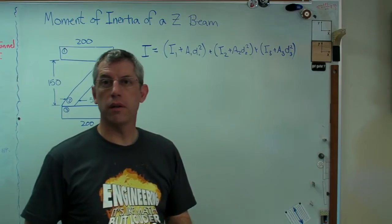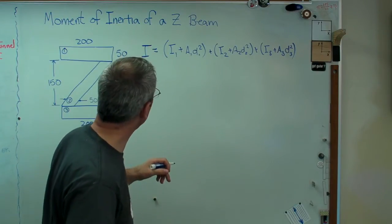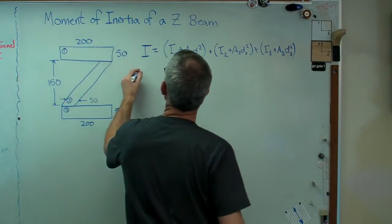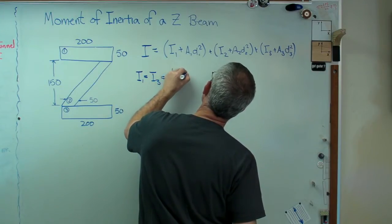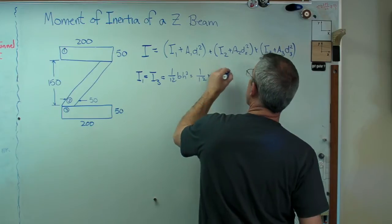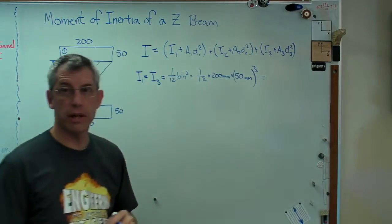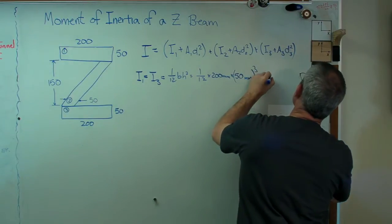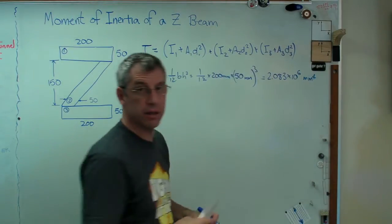So as long as I can figure out all the parts there, all the components, it's just a matter of computing this out. Well, the first thing I need to do is start calculating area moments of inertia. Well, for number one and number three, they're the same, and it's just a rectangle, so it's really easy. So I1 equals I3, and that's 1 over 12 base times height cubed. And we'll do this in millimeters today. So that's 1 over 12 times 200 millimeters times 50 millimeters cubed. So it's 2.083 times 10 to the 6 millimeters to the 4th. So there's I1 and I3.